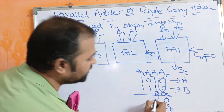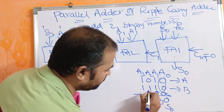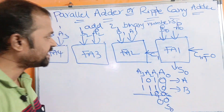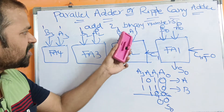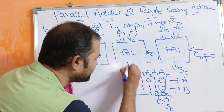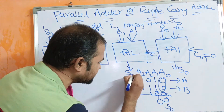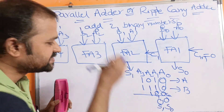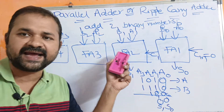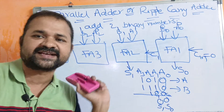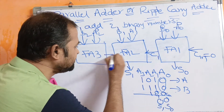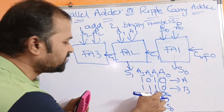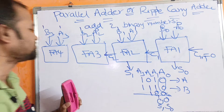For example, 1 plus 1 gives sum 0 with carry 1. The second full adder performs addition on a1, b1, and c1, and we get sum s1. The output carry is c2. Here c2 equals 1, so that 1 is supplied as input carry to the next stage.